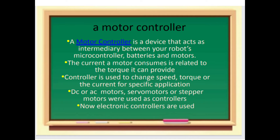The current a motor consumes is related to the torque it can provide. A controller is used to change speed, torque, or the current for a specific application. DC or AC motors, servo motors, or stepper motors are used as controllers. Now electronic controllers are used.